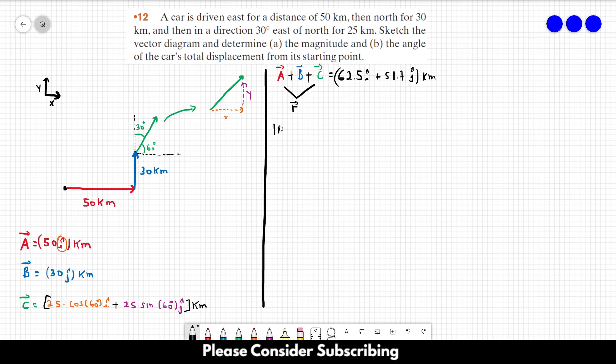So the magnitude of the vector R is equal to the square root of the x component squared plus the y component squared.